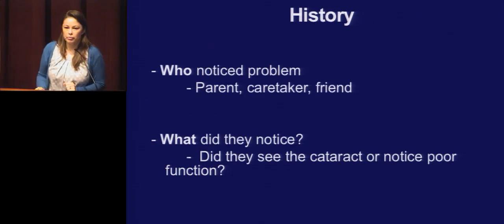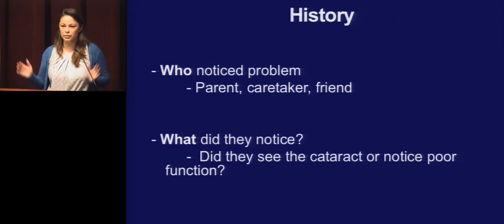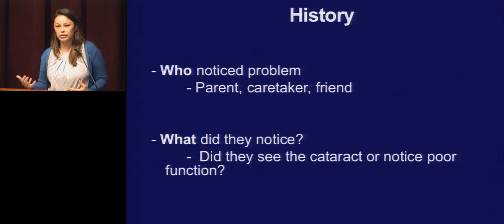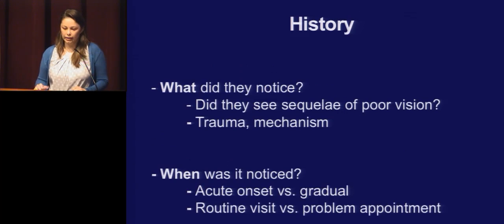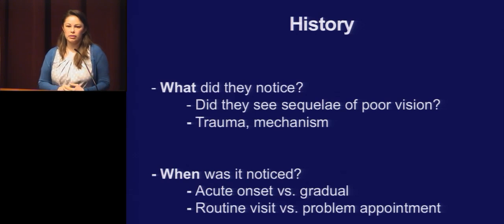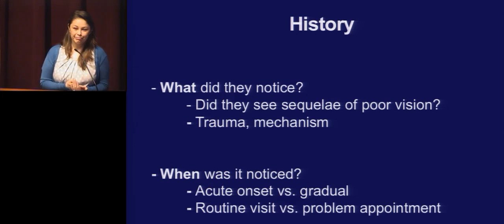History is really important with pediatric cataracts, unlike with adults. I ask who noticed it — the parent, a friend, a caretaker, the pediatrician — and what they saw: poor function, nystagmus, or something picked up on a routine exam. Was there preceding trauma, any possible mechanism, chronic steroid use? And when was it noticed — was it acute, which might suggest a posterior capsular issue, or more gradual?